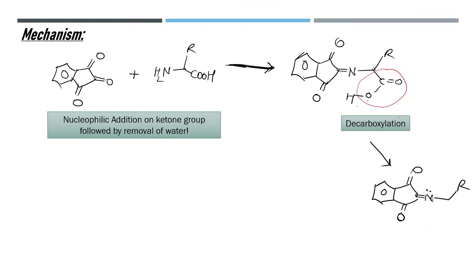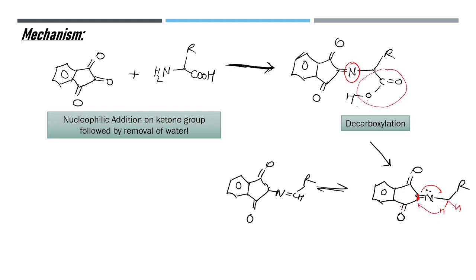This decarboxylation is easy because of the nitrogen present. The resulting double bond just outside the ring is not very stable because it cannot achieve the ideal 120-degree bond angle. A tautomerization occurs: one of the two hydrogens on that carbon shifts, and the double bond moves into the ring where it is more stable.